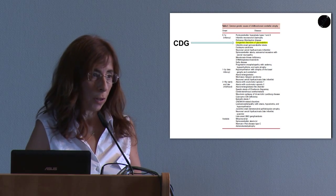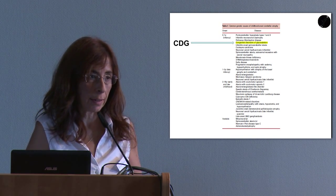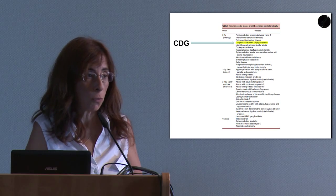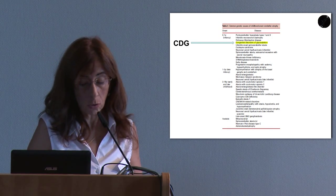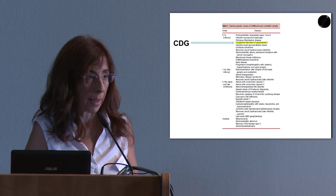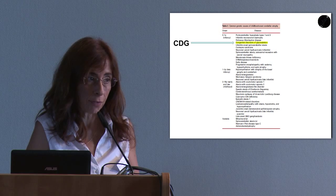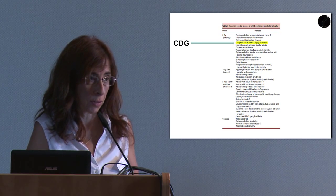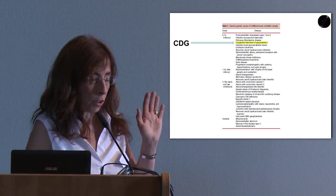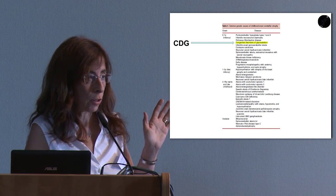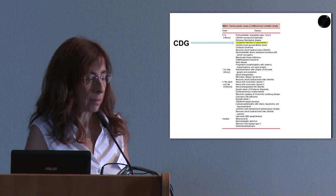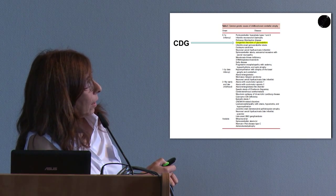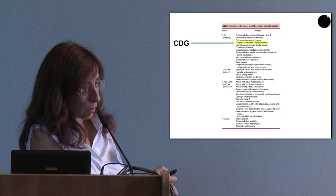Cerebellar atrophy occurs in a wide number of genetic diseases with great clinical and genetic heterogeneity. Considering all these genetic diseases with cerebellar atrophy, almost half of patients with cerebellar atrophy of genetic origin have no diagnosis. We can classify cerebellar atrophy of genetic origin by a clinical criterion — the age at onset — and CDG belongs to the cerebellar atrophy disorders with a very early onset in age.